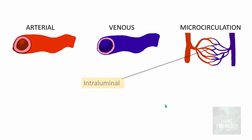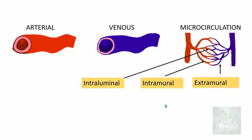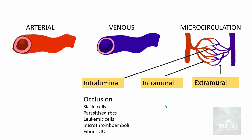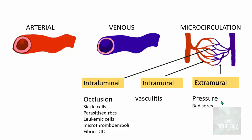Causes from the microcirculation side also include intraluminal, intramural, and extramural categories. Intraluminal causes include occlusion by sickle cells, parasitized red blood cells, clusters of leukemic cells, microthromboemboli, or fibrin in the case of disseminated intravascular coagulation. Intramural causes most frequently include vasculitis. Extramural causes — the most common example is a bed sore, which can compress the microcirculation resulting in microinfarcts.